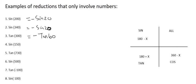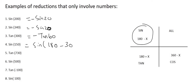Sin of 150 is the next one. 150 falls into the second quadrant. We rewrite it using 180 minus: 180 minus 30 gives 150. That becomes sin 30. Because sin is positive in that quadrant, the answer stays positive.